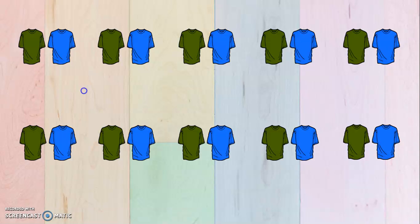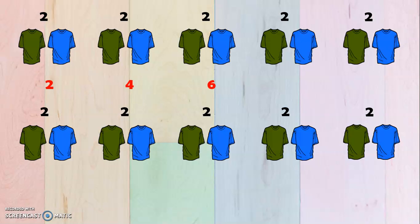Now we have here groups of shirts, and we may use them as a sample on how we can do skip counting by 2. So we may start with 2, and then 4, 6, 8, 10, 12, 14, 16, 18, 20.